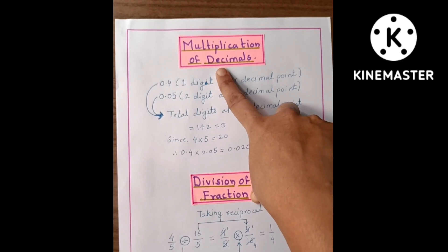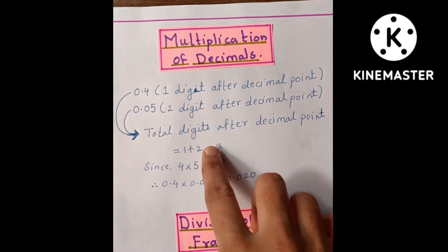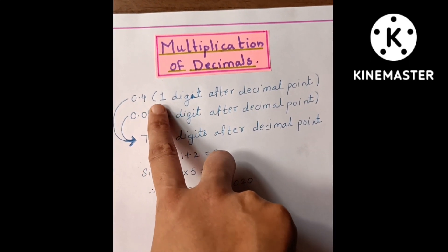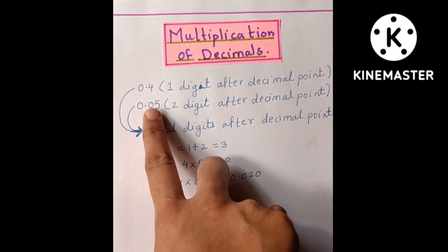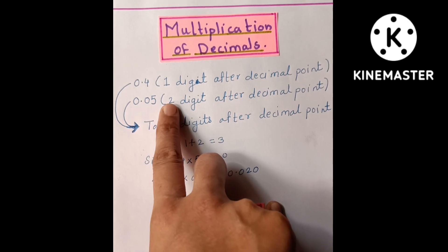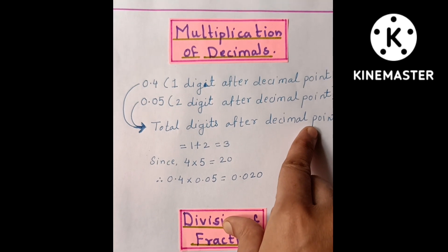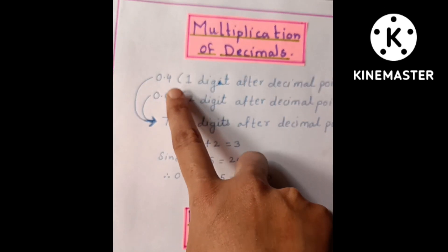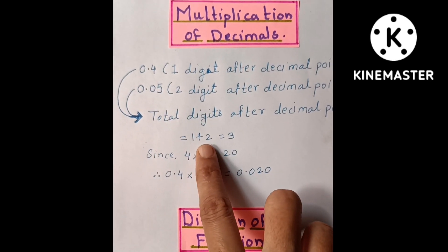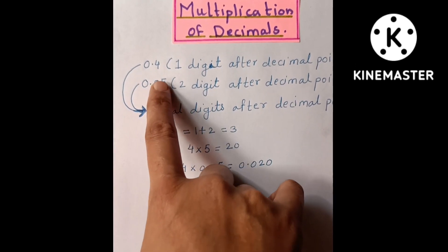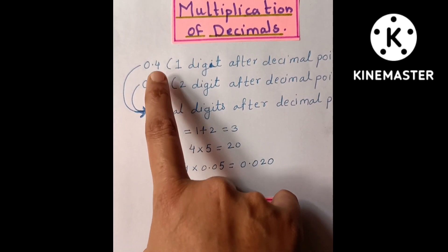Here is one digit after the decimal point and here two digits after the decimal point. The total digits after the decimal point are three, since one plus two equals three, meaning there are three digits after the decimal point.